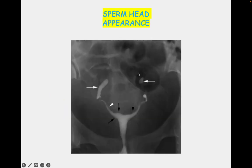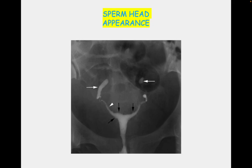Another picture seen in HSG is the sperm head appearance. The sperm head appearance results from vertically oriented, fixed tubes with ampullary dilation — the ampulla gets dilated, the tubes are vertically oriented, and they are fixed because of peritubal adhesions, which restrict the normal motility of the tubes.